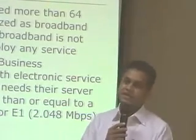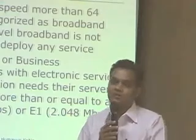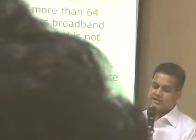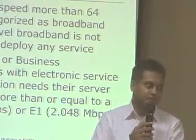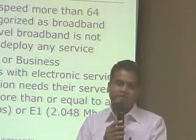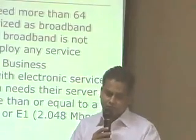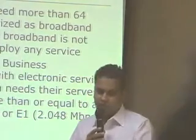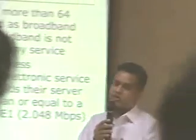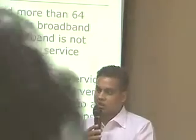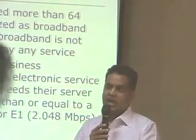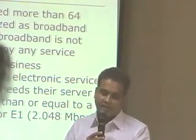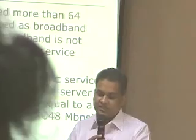Sometimes even the GPRS or EDGE connectivity providers are saying they are giving broadband — like cellular broadband. But if you go by the typical definition of broadband, anything faster than 64 kbps is called broadband. So EDGE gives 236–240 kbps and GPRS gives around 57–60 kbps. But if you want to deploy some service, 240 kbps or 60 kbps is not enough, even though it technically falls into the broadband category. We need higher-level broadband — more than 1.5 Mbps, or E1 connectivity at 2.048 Mbps.